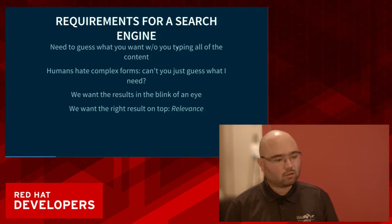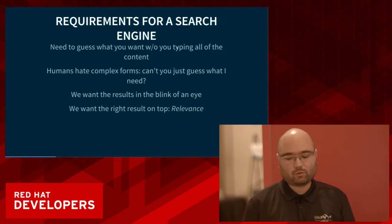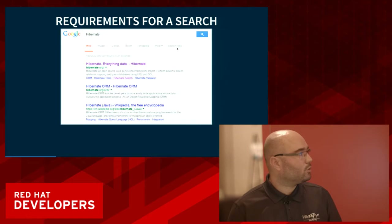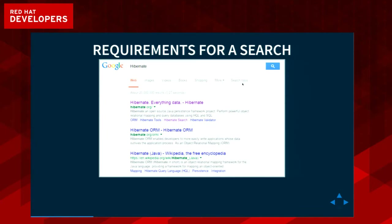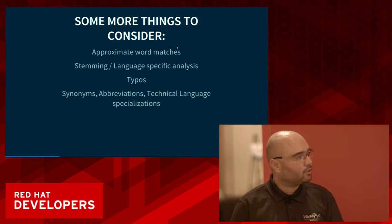Relevance means that if I'm searching for something, the first results I need are on top. People are not going to look at the full page of Google results or even the second page — if you're there, you're out. This is well known in marketing, but it applies to any human interaction. So you have to consider several aspects.